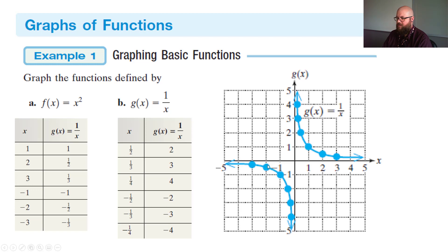Then negative 1 and 1, negative 2 and negative 1 half, negative 3 and negative 1 third. So it's getting closer and closer to y = 0, but it's not actually going to touch that asymptote. It's an invisible line there.